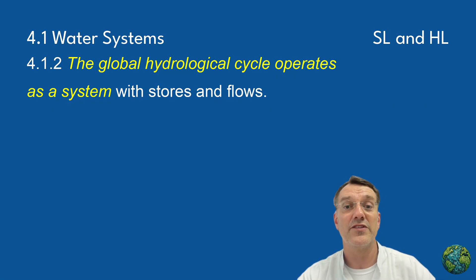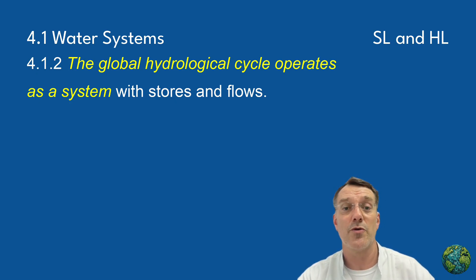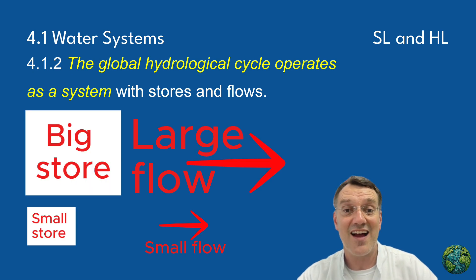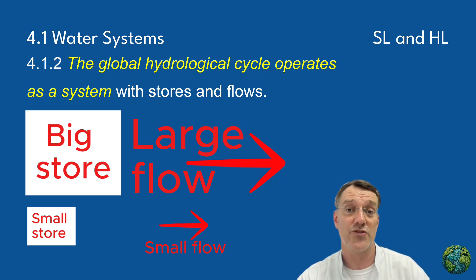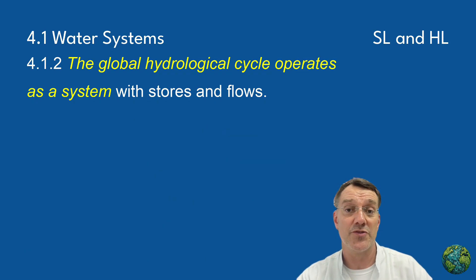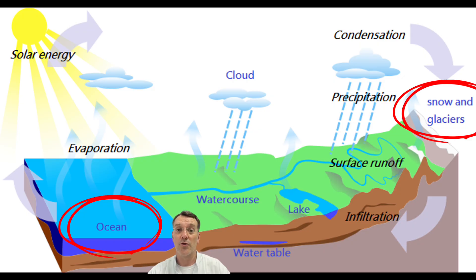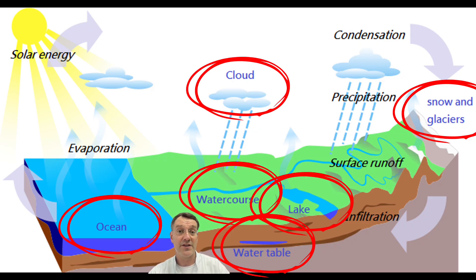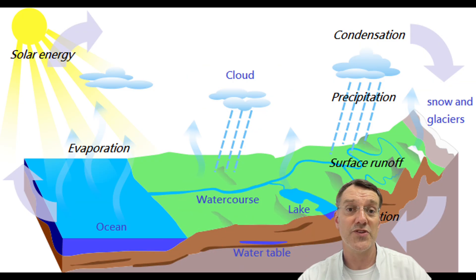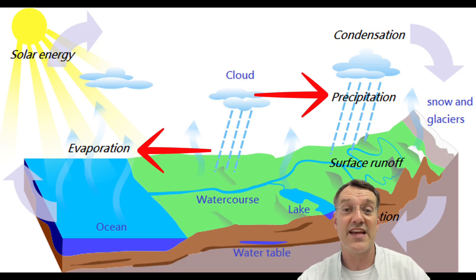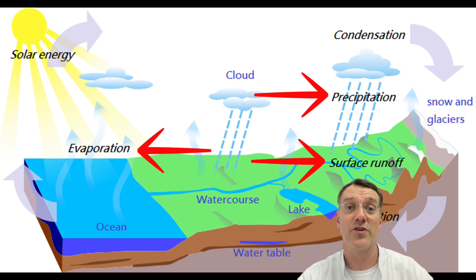The global hydrological cycle operates as a system with stores and flows. In water cycle diagrams, stores are shown as boxes and flows are shown as arrows. The size of boxes and arrows should represent the relative magnitude or size of each store or flow. A system includes storages, which are places where water is held, and flows, which are movements of water between storages. In the water cycle, major stores include oceans, ice caps, groundwater, lakes, rivers, the atmosphere, and living organisms. Flows include processes like evaporation, precipitation, and runoff that move water between those different stores.